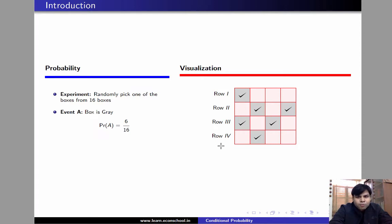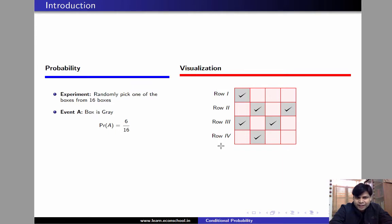Now suppose we receive an additional piece of information that the randomly selected box is in row 1. How do we update our probability of event A given this new piece of information? For this we need conditional probability.